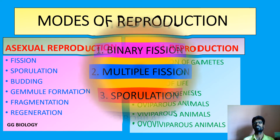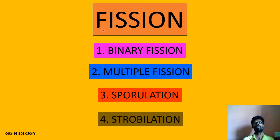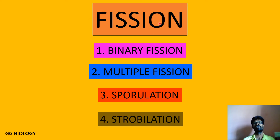Regarding fission: the meaning of fission is nothing but cutting or dividing. The parental cell will divide or cut into fragments, thereby producing young ones. Under fission we have the following sub-types: binary fission, multiple fission, sporulation, and strobilation. This question may come for two marks — what are the categories regarding fission? You write these four subdivisions.